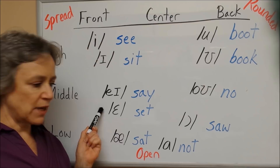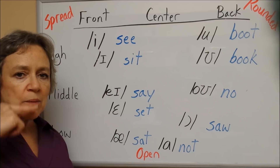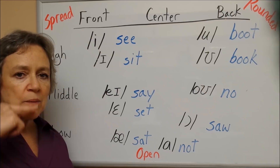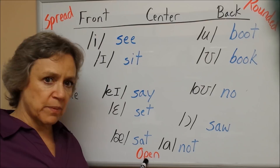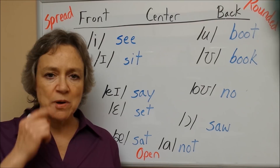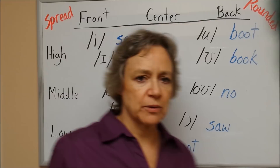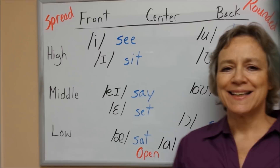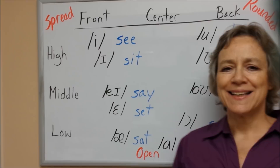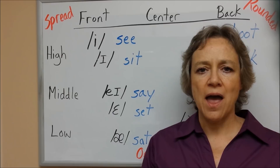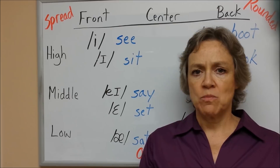Then we have eh. It's still a front vowel, so the front of my tongue is important, but it's low in my mouth — notice my jaw is opening. As we go down the chart, these bottom vowels have the mouth more open. Watch my mouth movement as I go down: ee, i, eh — my mouth is opening more as I go down.